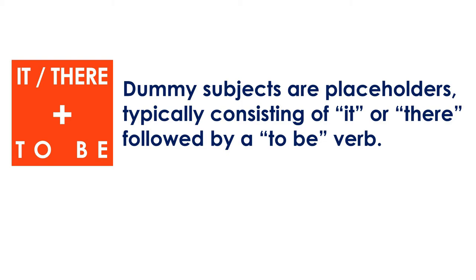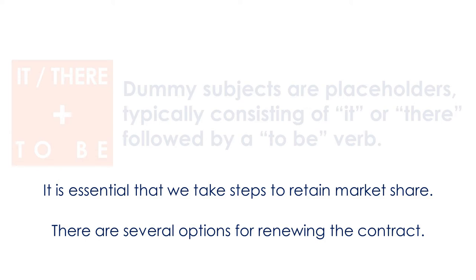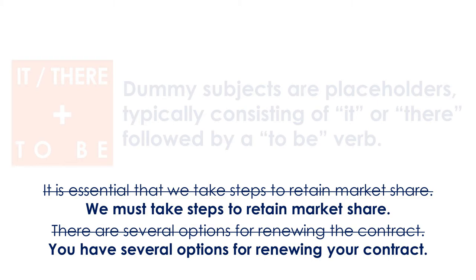Dummy subjects are placeholders — they're not a person, place, or thing capable of action. They typically consist of 'it' or 'there' followed by some version of the verb 'to be.' For example: 'It is essential that we take steps to retain market share,' or 'There are several options for renewing the contract.' To fix these, remove the dummy subject and begin with a concrete subject: 'We must take steps to retain market share,' and 'You have several options for renewing your contract.'